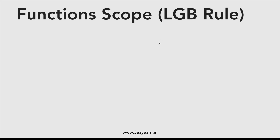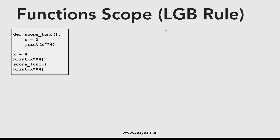Let's take a simple example. The function is called scope_function, and I define a variable x equal to 2 and print x to the power 4, which would print 16. I have also defined x equal to 4 outside, and I'm printing x to the power 4, then calling scope_function, and then printing x to the power 4 again.